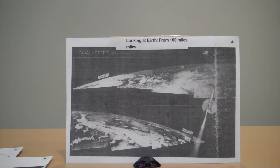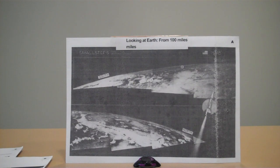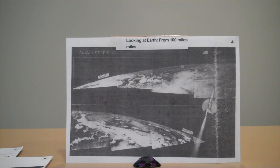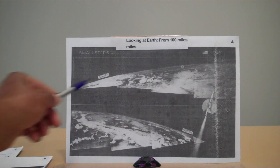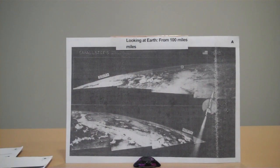The Earth's curvature, if it is curved at all, cannot be seen from 100 miles to 5,000 miles up. Look at this picture. This is illustration A. You've been taught and told this is the curvature — the curvature of the Earth as a whole, seen from 100 to 300 miles above it.